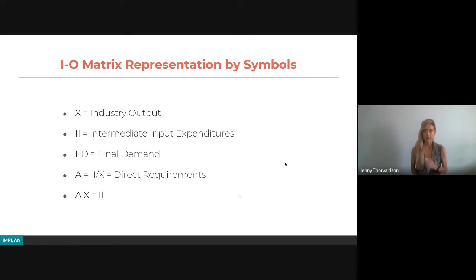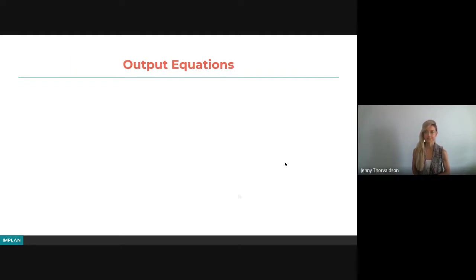Another thing that'll be important for our use will just be to note that since the A matrix is the II matrix divided by the X matrix, you could also just rearrange that and say that the A matrix times the X matrix, so direct requirements times output, gives you back your intermediate expenditures. The A matrix is just percentages, basically, per dollar of output. If you multiply that by the industry's output, then the intermediate input expenditures in dollar terms gets returned to you. This will all make sense when we talk about the output equation next.